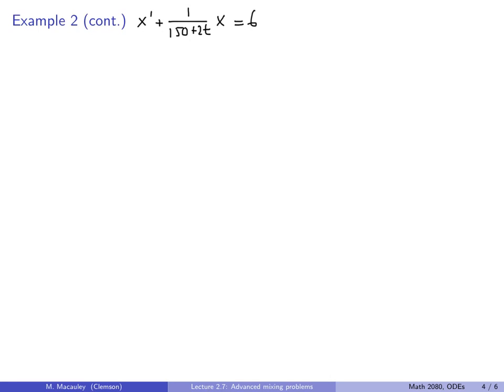The reason I'll use variation of parameters is because the first step is solving the homogeneous equation — and that's also the first step in the shortcut I've called undetermined coefficients: homogeneous plus particular solution. So let's solve the homogeneous equation along the way, and if we happen to spot a particular solution, we've already done the work and don't have to do that last step.